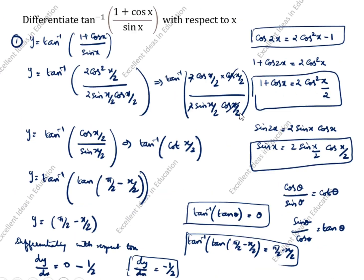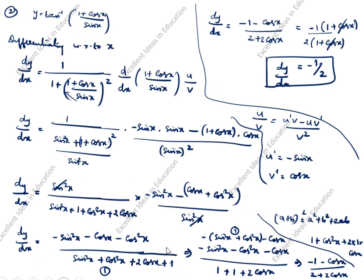The first method answer is minus 1/2, and the second method answer is also minus 1/2, just using different methods. We used the identity sin square x plus cos square x equals 1, which we already studied in trigonometry identities. Thanks for watching this video.